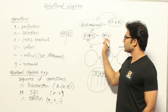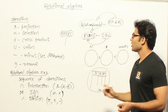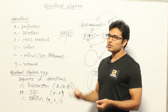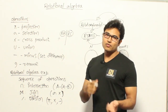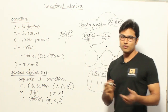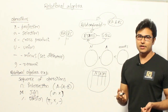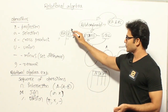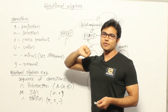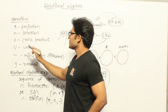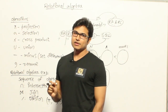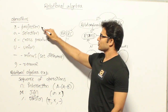SQL is derived as a combination of relational algebra and relational calculus. In relational algebra, we specify both what we want and how we want it. In relational calculus, we just specify what we want without specifying how we want it. We'll focus on relational algebra first. The basic operations in relational algebra include projection, selection, cross product, union, set difference, and rename.